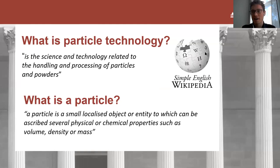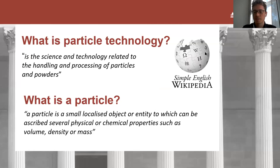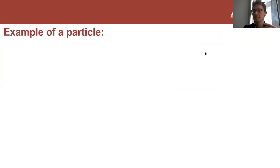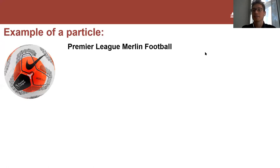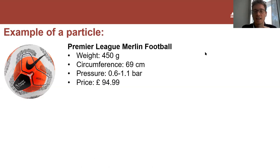So let's start. What is particle technology? It is the science and technology related to the handling and processing of particles and powders. What is a particle? A particle can be defined as a small localized object or entity to which - and that's the important bit - we can ascribe several physical or chemical properties. Let's start with an example: my favorite particle, a football. In this case, it's this year's Premier League football, the Merlin.